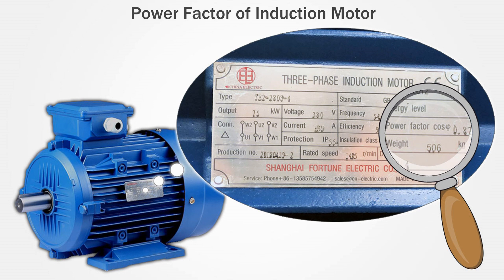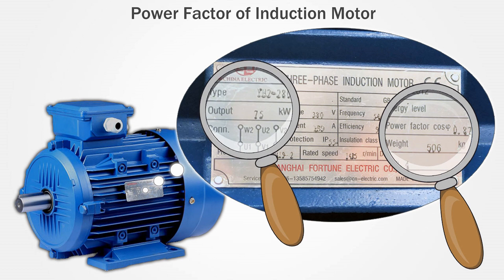Let's get back to our induction motor and take a closer look at the motor nameplate. As we can see, this induction motor has a power factor of 0.87. We know the power factor is a variable value. As power factor varies with load, the nameplate power factor is at full motor load. For example, the power factor of this motor is 0.87 with the rated output of 75 kilowatts.